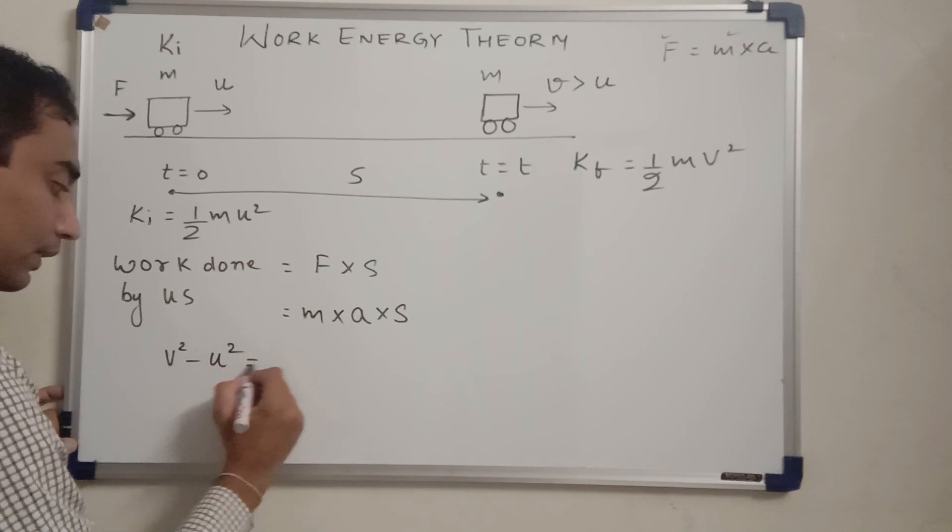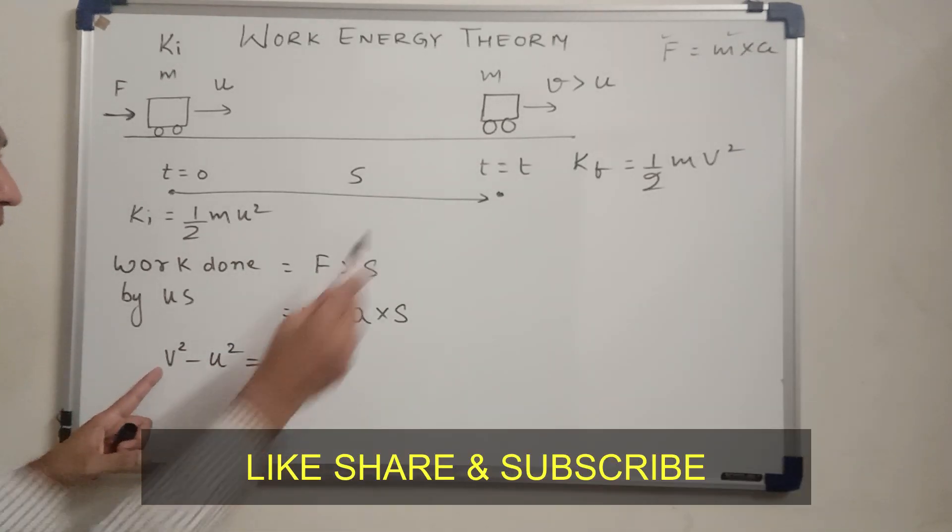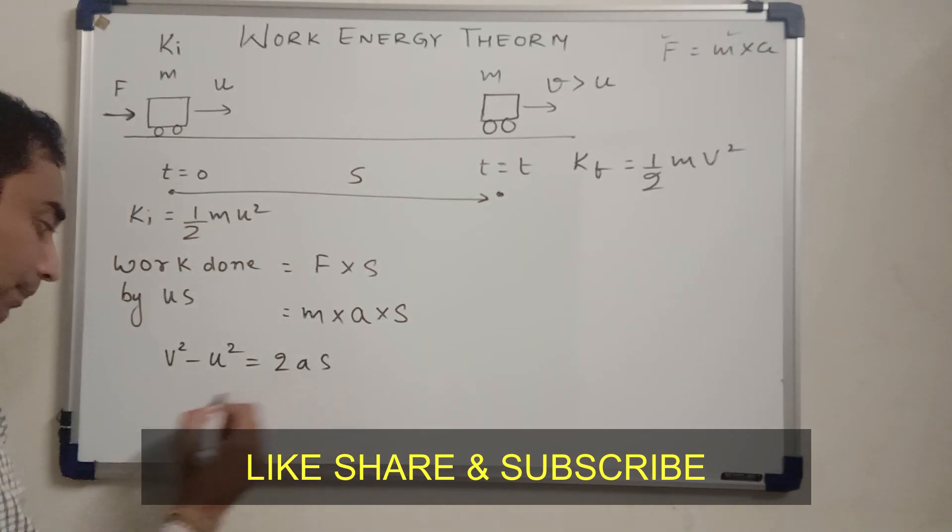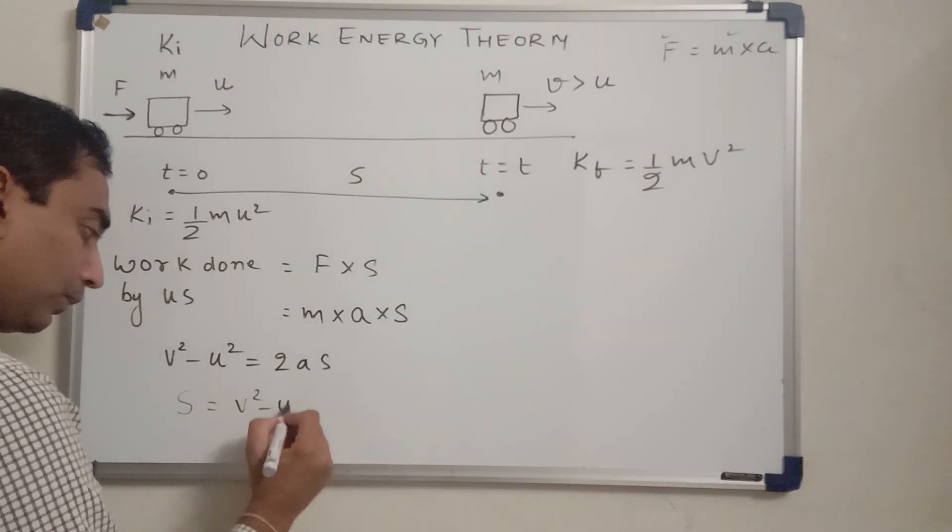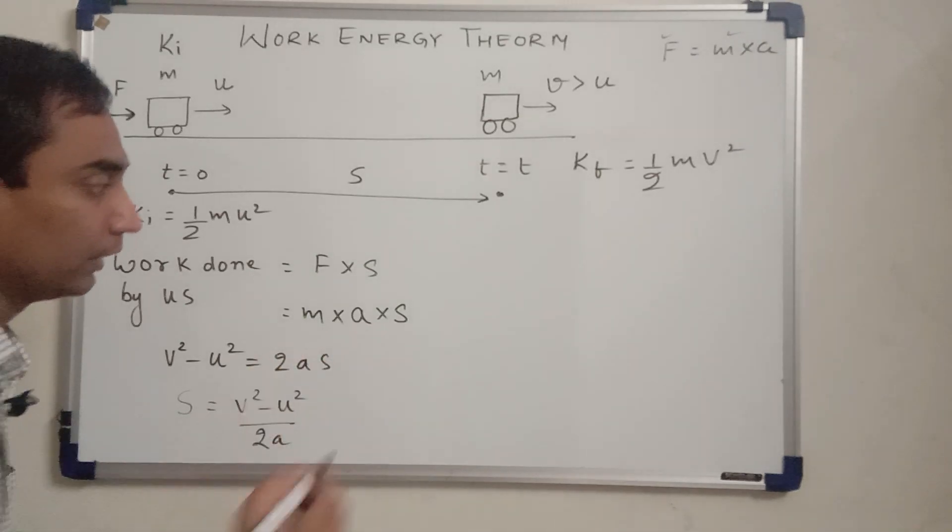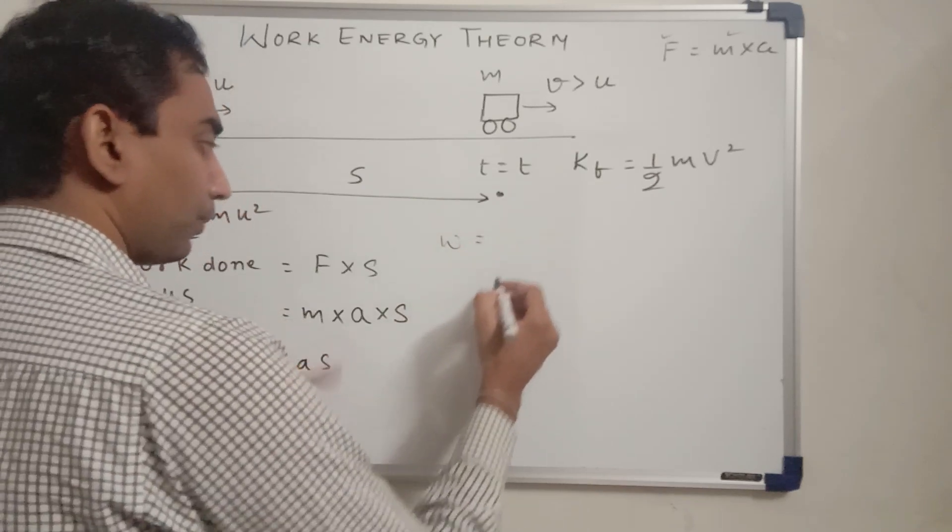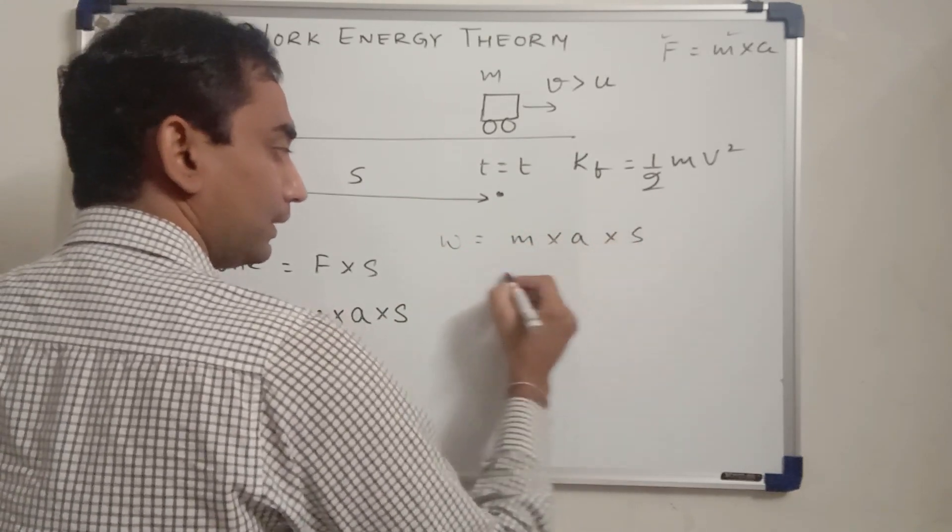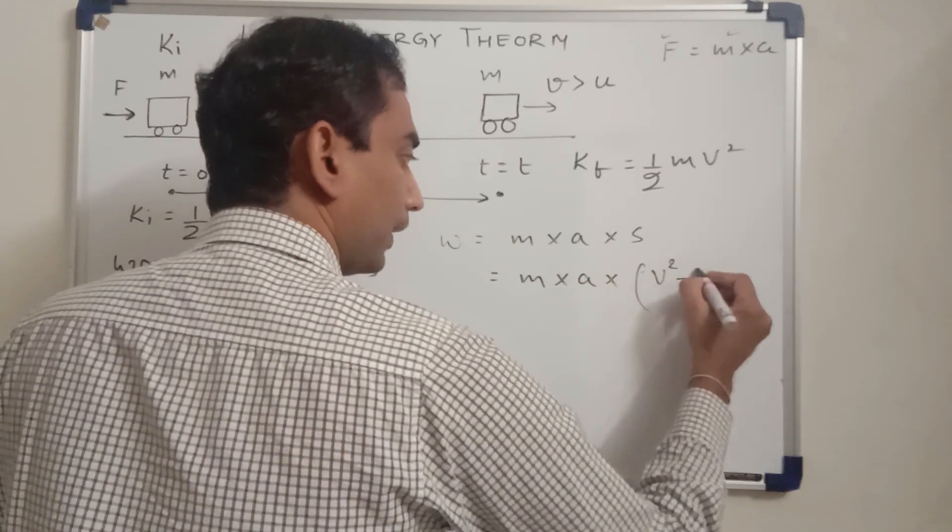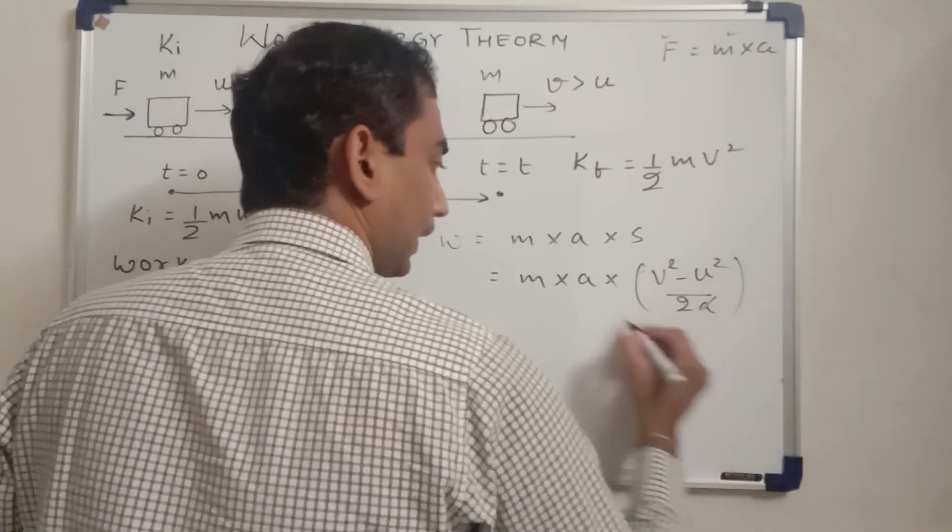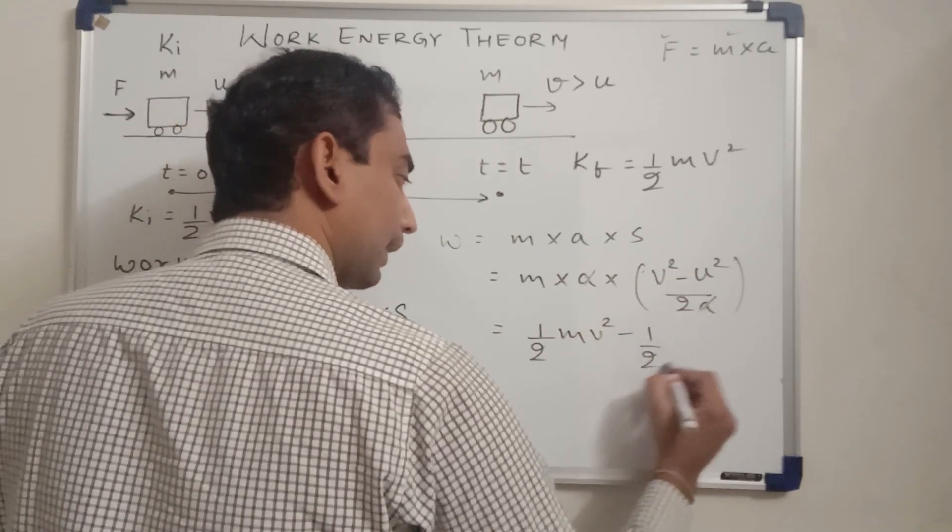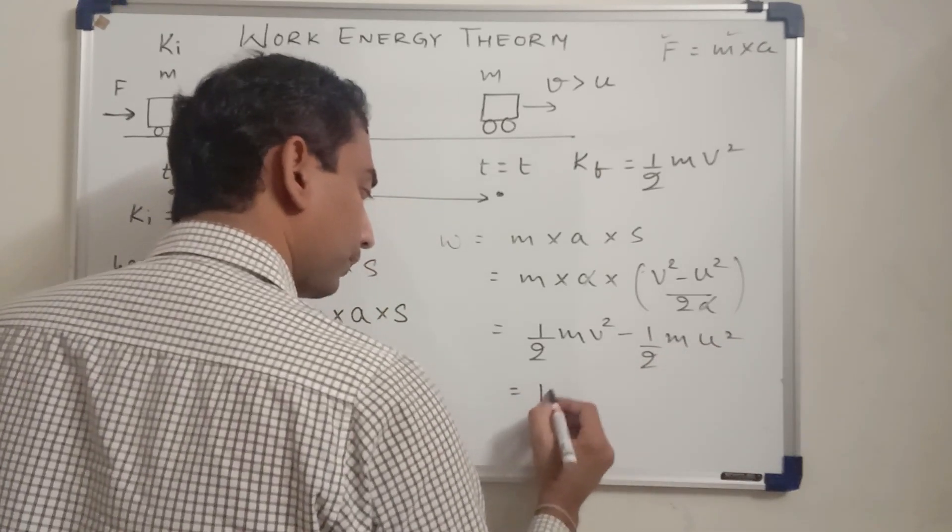We can apply this equation v² minus u² equals 2as, where v is the final velocity, u is the initial velocity, s is the displacement. If I make s the subject, so v² minus u² upon 2a is the displacement which I am going to substitute it over here. So work done which was equal to m times a times s, now it is equal to m times a times the value of s, which is v² minus u² upon twice of a. a getting cancelled, if you open up the bracket you get this as half mv² minus half mu². This is equal to final kinetic energy minus initial kinetic energy.